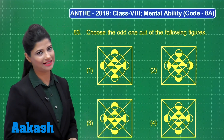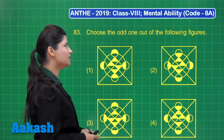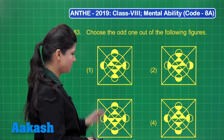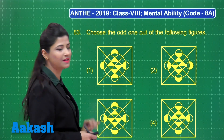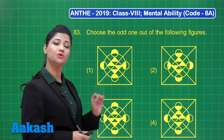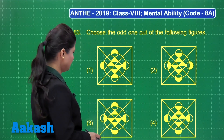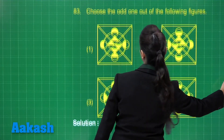Let us proceed with question number 83. It states: choose the odd one out of the following figures. You can see in the options we have 4 figures; you need to choose the odd one out. Let us observe these figures closely.